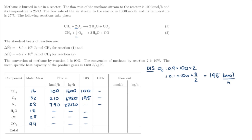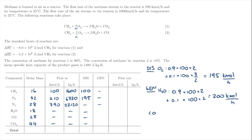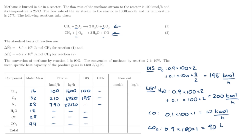Nitrogen doesn't react. For generation terms: water has a stoichiometric coefficient of 2 in both reactions, so we get 200 kmol per hour of water vapour produced. CO is only produced in reaction 2 with a coefficient of 1: 0.1 × 100 = 10 kmol/hr of CO. CO₂ is produced only in reaction 1 with a coefficient of 1: 0.9 × 100 = 90 kmol/hr of CO₂.